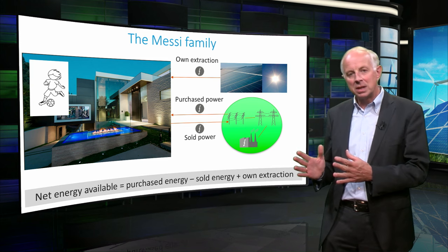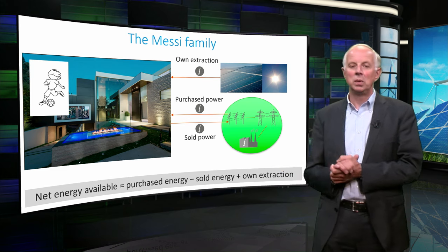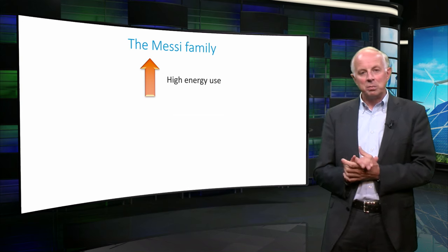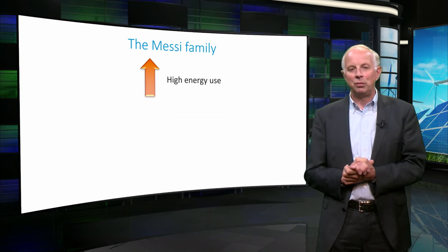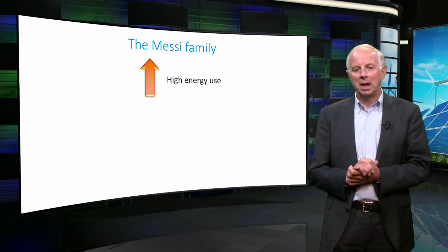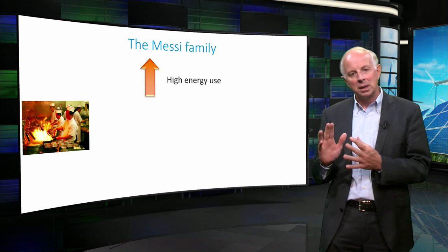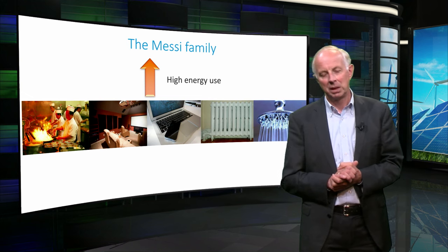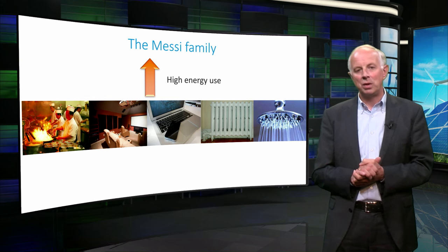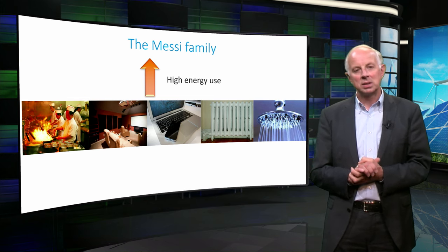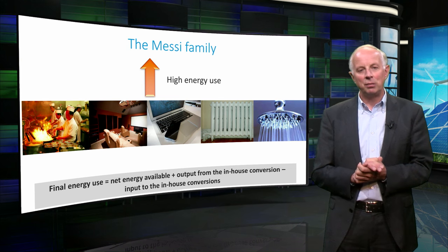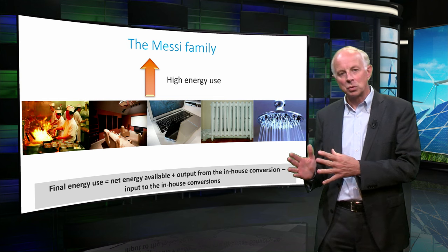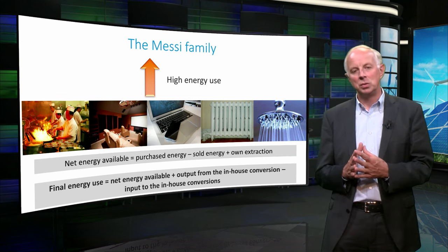This is purchased energy minus sold power plus own extraction. The luxurious life Mr. Messi and his family live is reflected in their energy use, which is quite high. Energy is used for cooking, entertainment, communication, heating and hygiene, among others. For this energy use, various conversions take place in the house. Hence the final energy can be defined as net energy available plus output from the in-house conversion processes minus the input to these conversions.